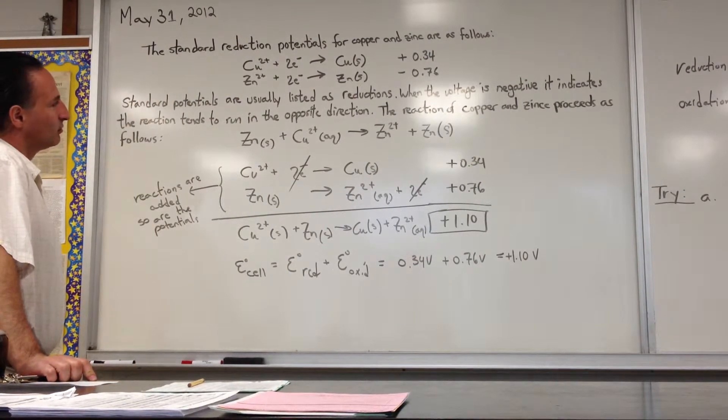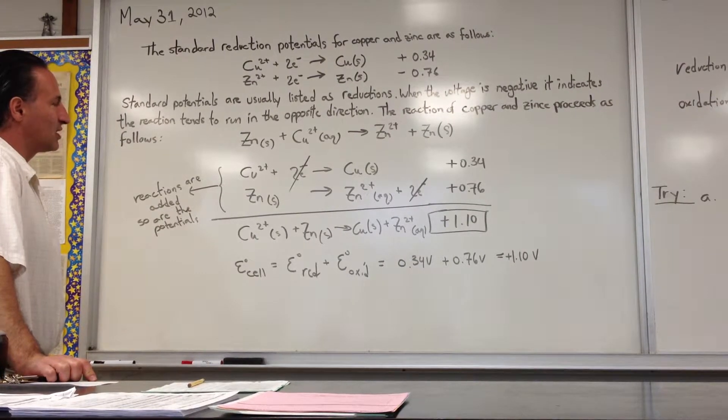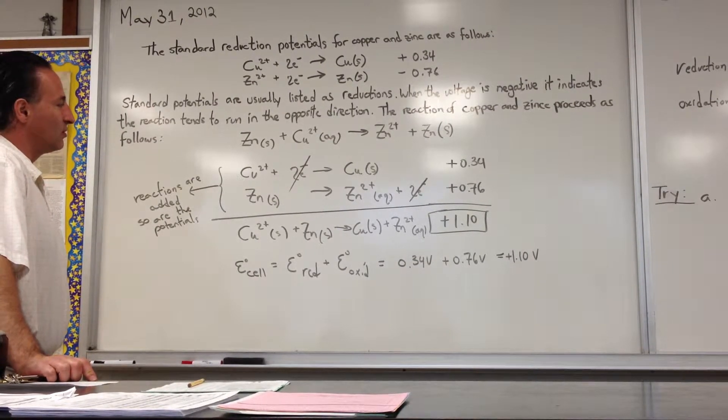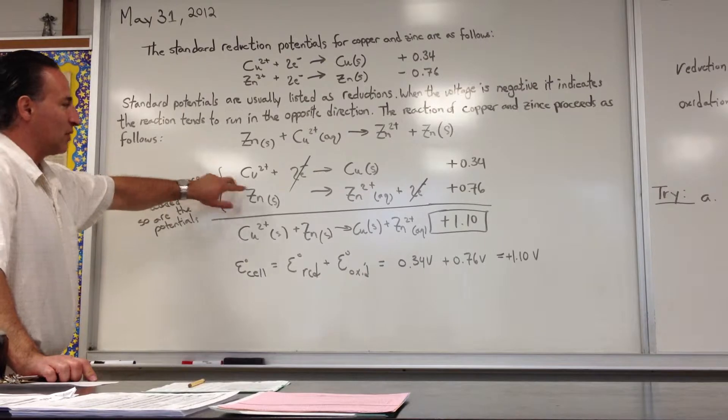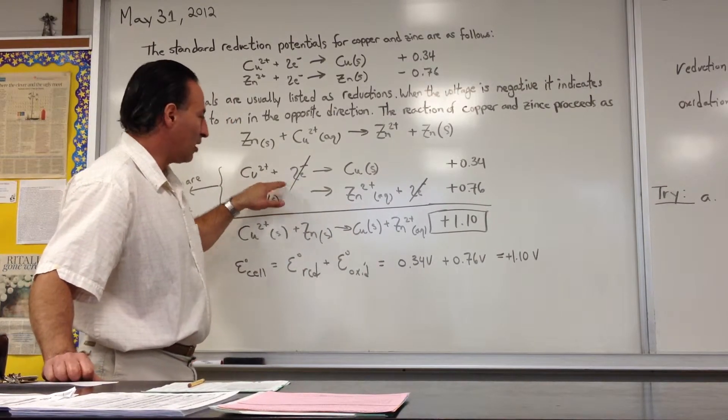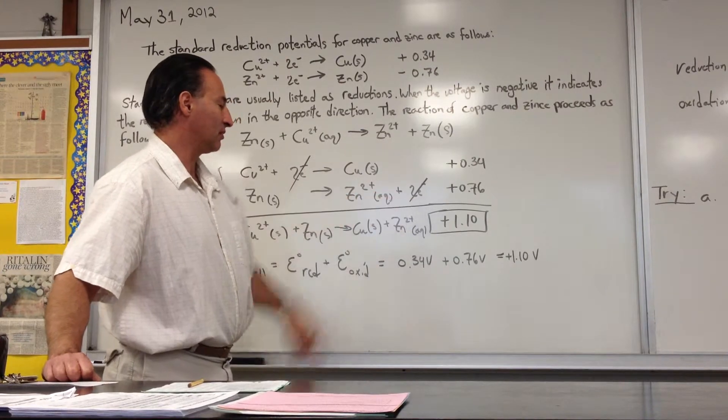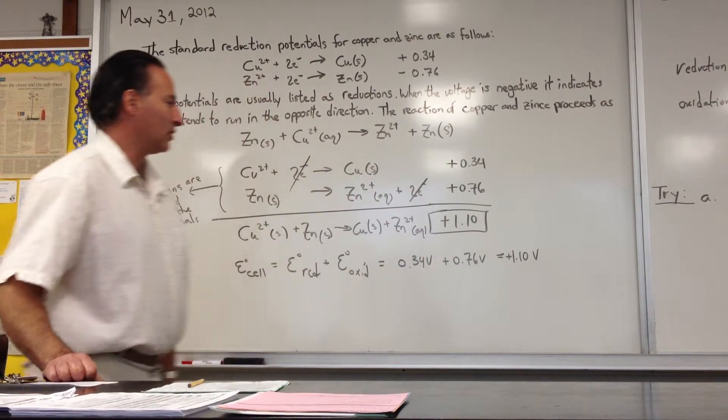In this coupled redox reaction, we see that because the zinc likes to actually give up the electrons when coupled with copper, we write the two reactions in this way. We cancel the two electrons that are being added to copper and the two electrons that are being given up by zinc, so that the total voltage is 1.1.